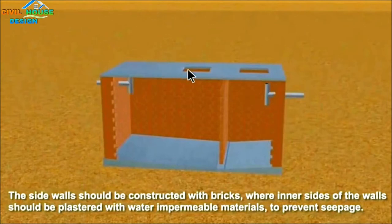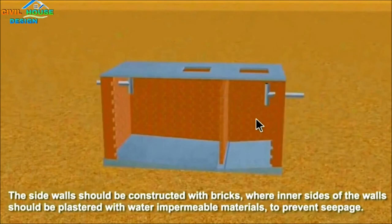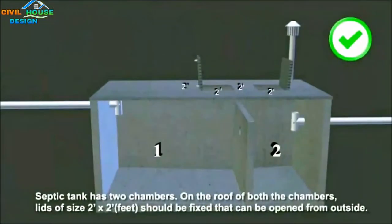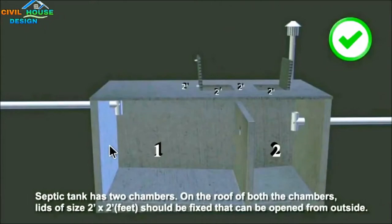This is the top slab with the main holes — two manholes. This is the most important part: the two chambers of the septic tank are made separate. The tank is made of brickwork.